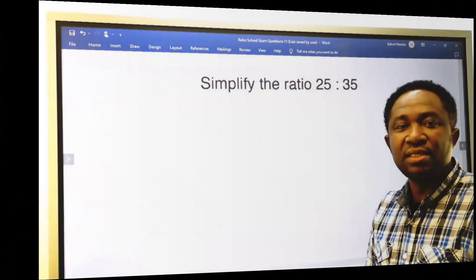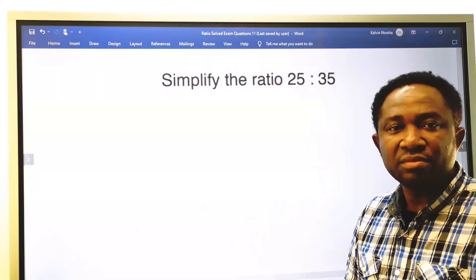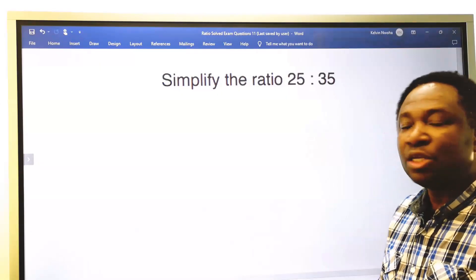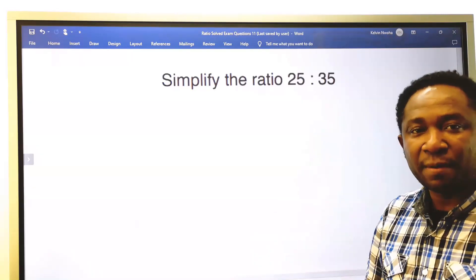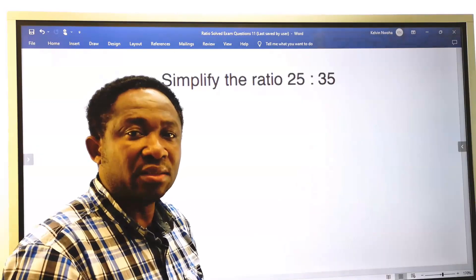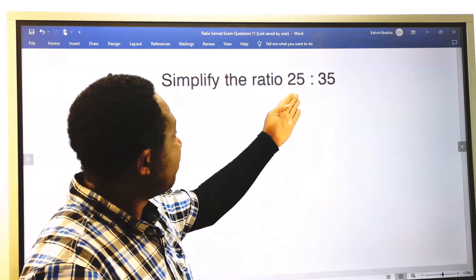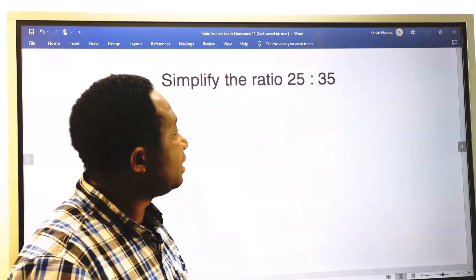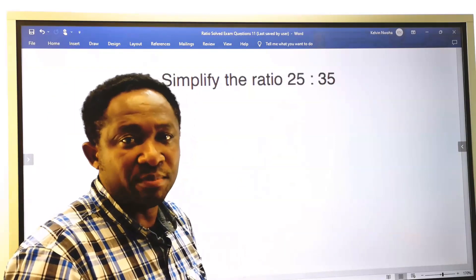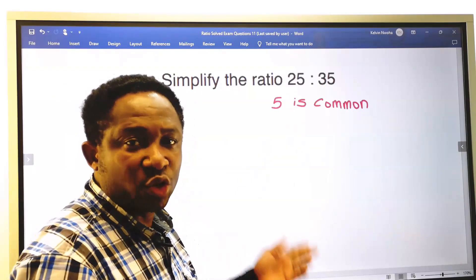Let's consider this simple exam question. We are going to simplify 25 to ratio 35. Step number 1. What is the common factor that can divide 25 and also divide 35 to their simplest form? 5 is common.